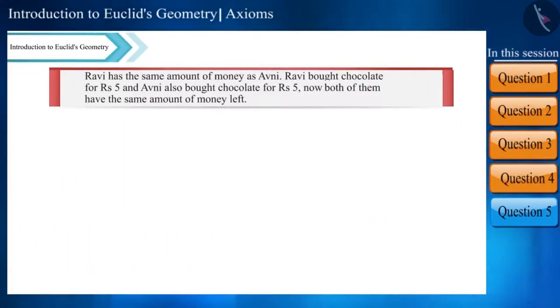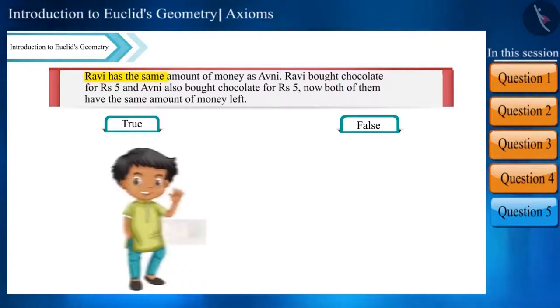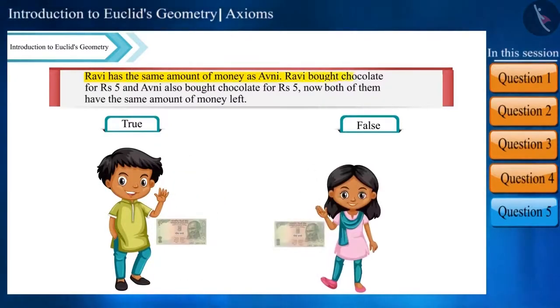Is this statement true? Read it carefully: Ravi has the same amount of money as Avni. Ravi bought chocolate for Rs. 5 and Avni also bought chocolate for Rs. 5. Now both of them have the same amount of money left.